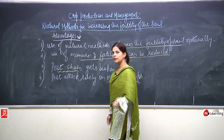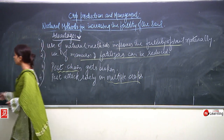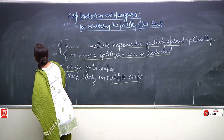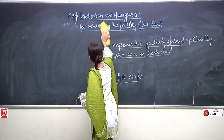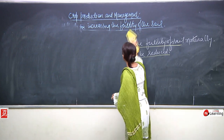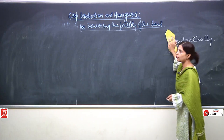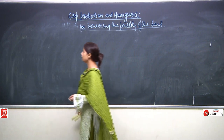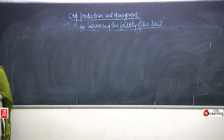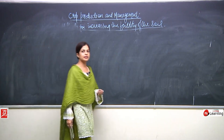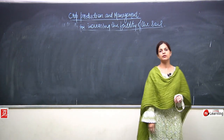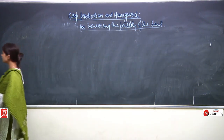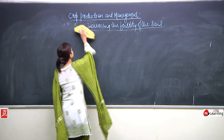From the beginning of the chapter, we have been studying different processes like preparing the soil, tilling, sowing, and manures and fertilizers. Now, next we are going to read about irrigation.